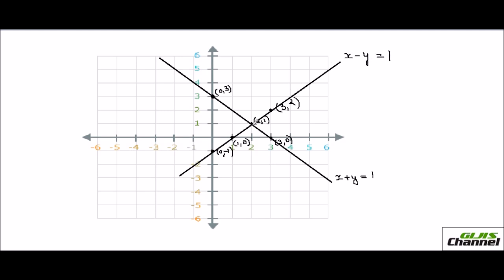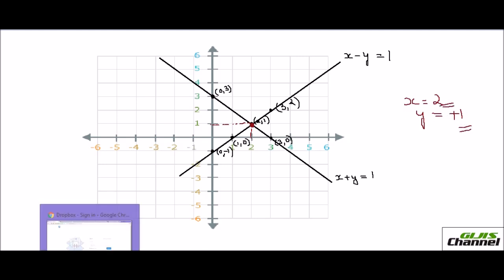Now see where the two lines intersect. I'm using red to point it out — the two lines meet here. The value there is x equals 2 and y equals 1. So the solution is x equals 2 and y equals positive 1. That's your solution — understood!